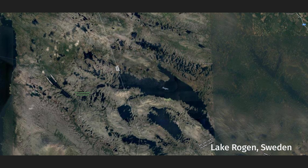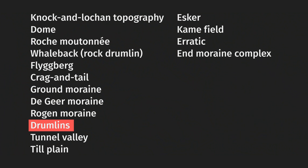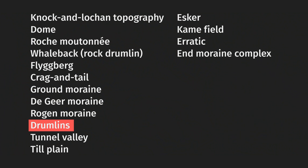In close proximity to Rogen moraines, and or close to the edge of the former continental glacier, drumlin fields are often found. Drumlins are smooth hills of glacial till elongated in the direction of the ice flow. Their stoss sides are steep and their lee sides are gently sloping.